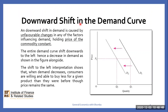Let's now turn our attention to downward shift in the demand curve. A downward shift in demand curve is caused by unfavourable changes in any of the factors influencing demand, holding price of the commodity constant. In this case, the entire demand curve shifts downwards to the left, and hence a decrease in demand as shown in the figure alongside. Our original demand curve in this case was D1, but with unfavourable changes in demand, the entire demand curve shifts downward to D2, and hence we have a decrease in quantity demanded — previously it was Q1, now it's Q2.